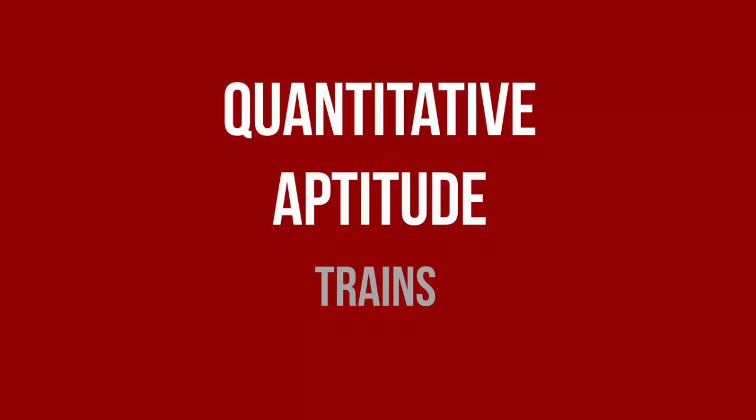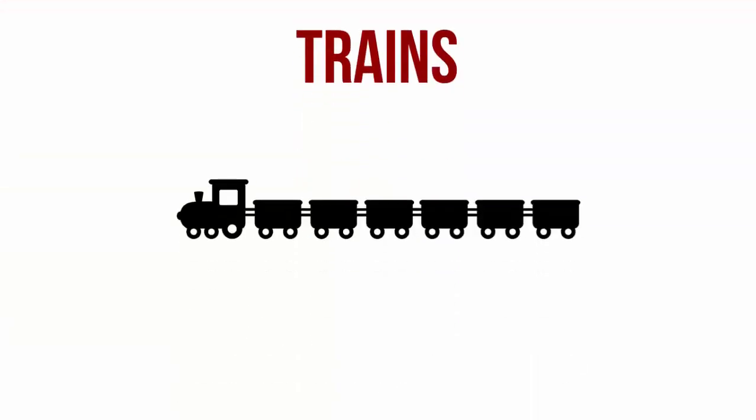We shall now discuss a special kind of time and distance problems that pertain to trains. Why are trains so special? Trains are different because, compared to an ordinary person walking or a car, they are really long. So when you are calculating time and distance problems related to trains, you have to take into account the train's length itself. Problems on trains are not very common in the IBPS, but they have definitely been asked several times in the past. Since this is just an applied kind of time and distance problem, you should know this concept well so that when such a question comes, you could easily solve it.